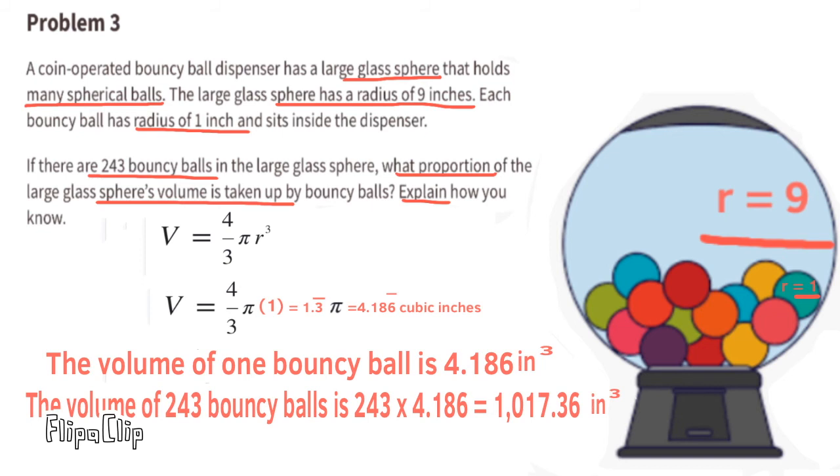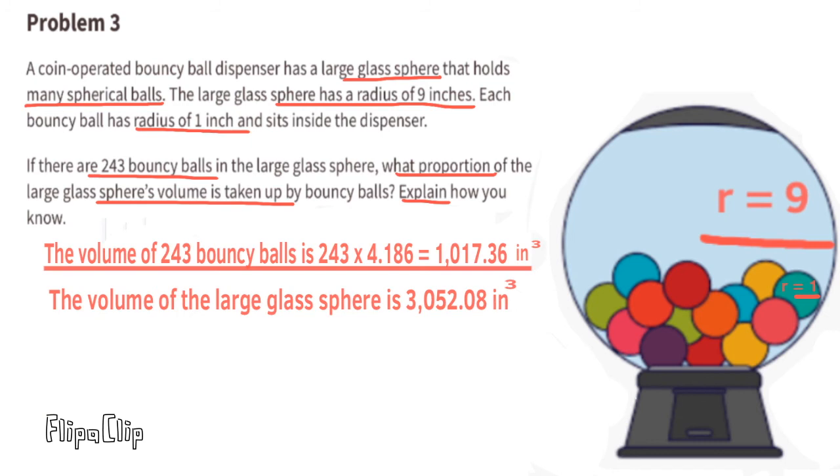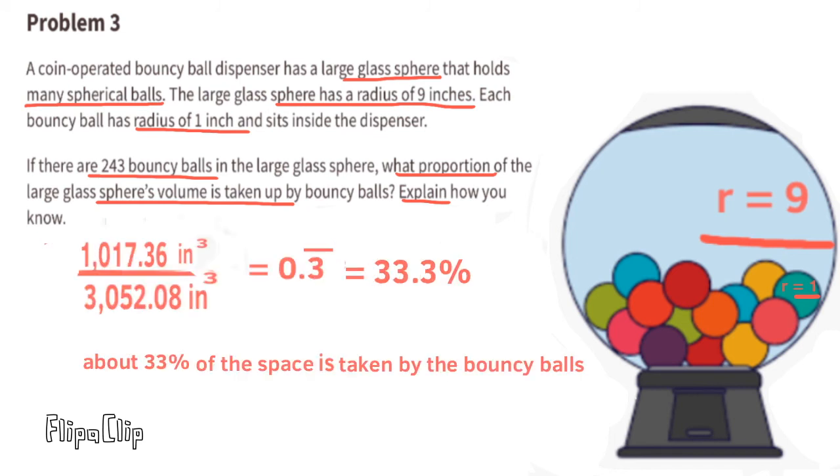Since there's 243 bouncy balls inside the glass sphere, we need to multiply 243 times 4.186 cubic inches, and we get 1,017.36 cubic inches. The total volume of all 243 bouncy balls divided by the volume of the large glass sphere is about 33.3%. So about 33% of the space is taken up by the bouncy balls.